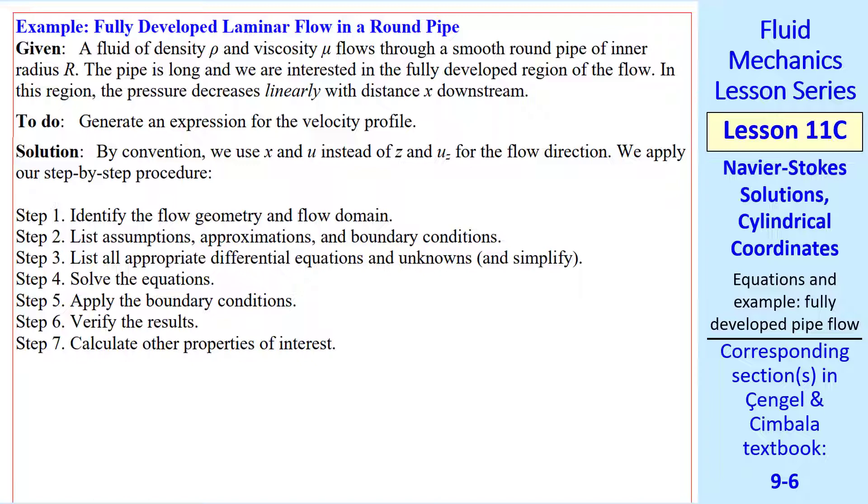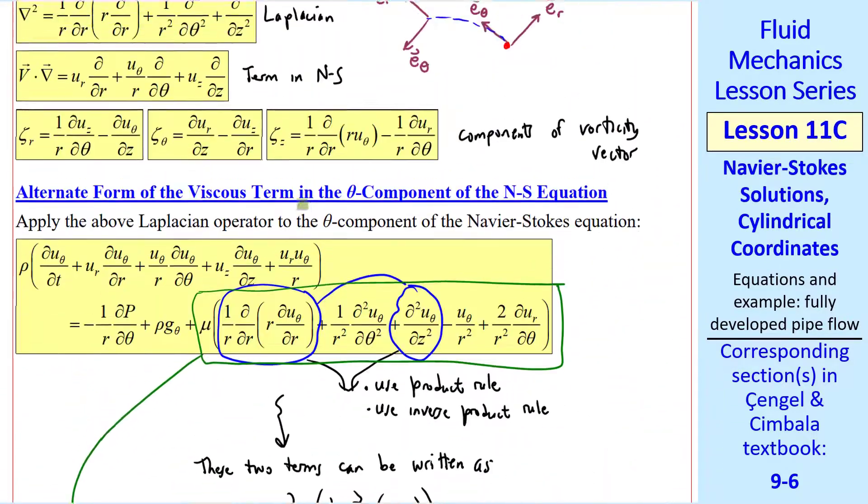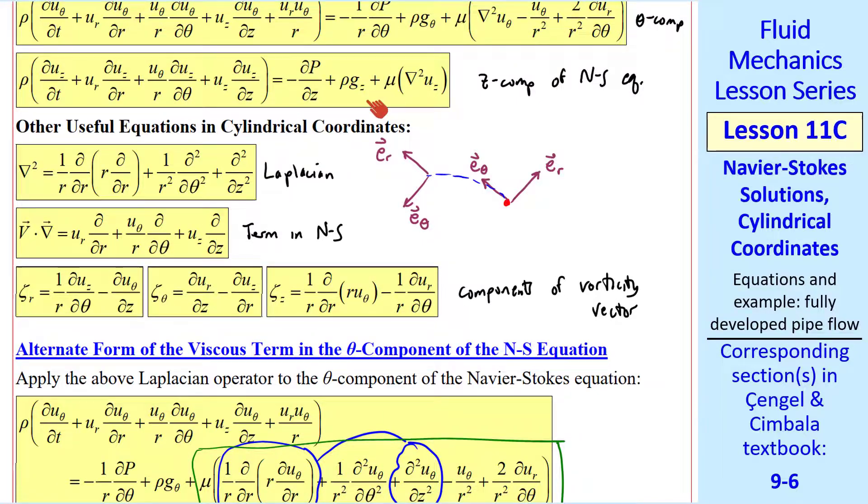We have a fluid of density ρ, viscosity μ, and a smooth round pipe of inner radius R. We're interested only in the fully developed region, where we know that the pressure decreases linearly with distance x downstream. In this problem, by convention, we use x and u instead of z and uz for the flow direction. In fluid mechanics, we typically like x to be the direction of the flow, even though these equations here were set up in terms of uz and z. Everywhere we have a z, we change it to an x. And everywhere we have a uz, we change it to a u.